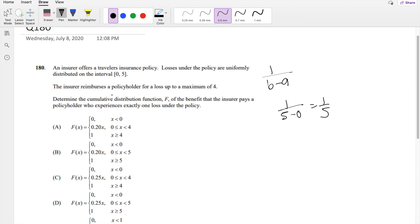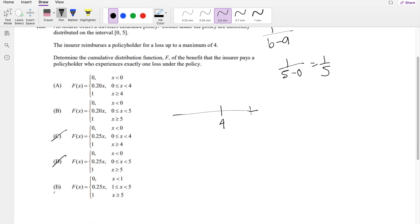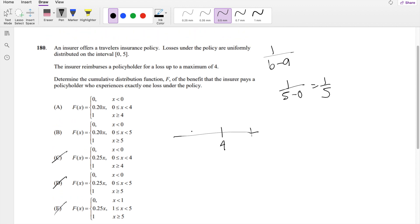It really doesn't matter that they only reimburse up to 4. The probability distribution function is not going to change, and so that's 0.2. So then we can actually already cross out these three, because I don't know why they have 0.25x.